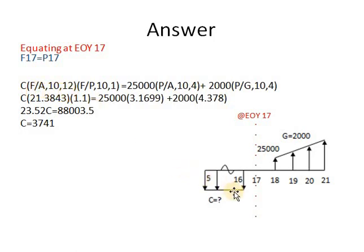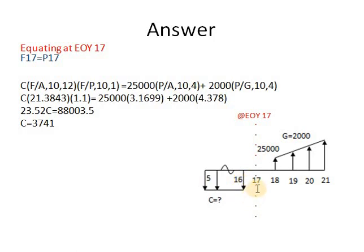As if the annuity result is a present at year 16 and I am getting its future at year 17, so I multiply by F/P at 10%, N=1.